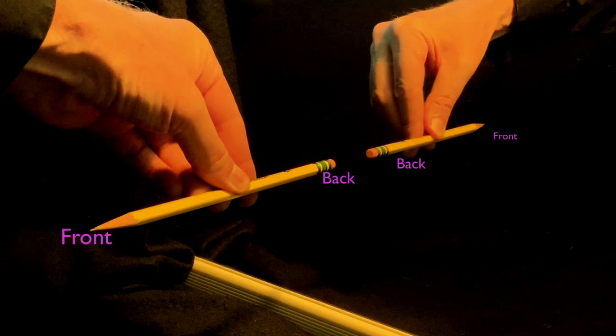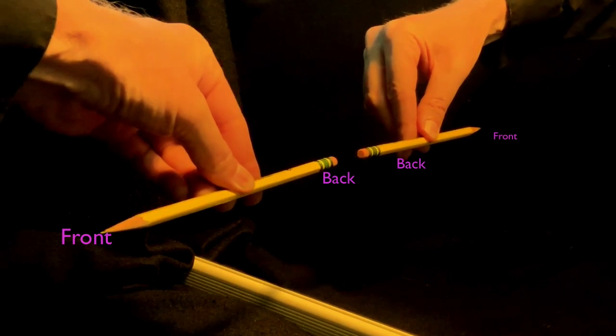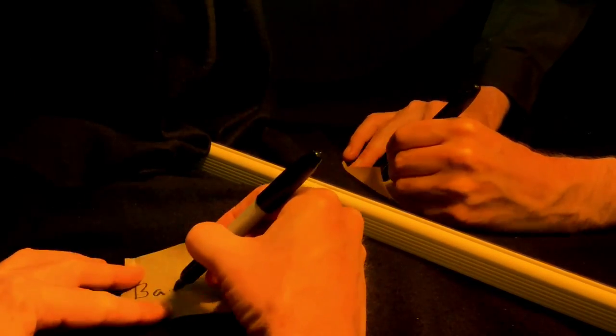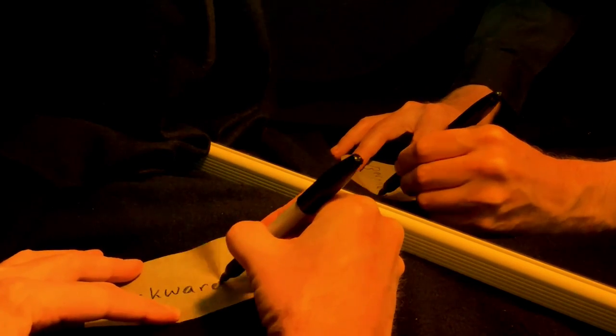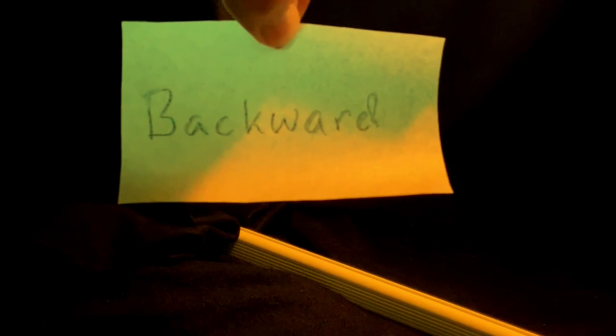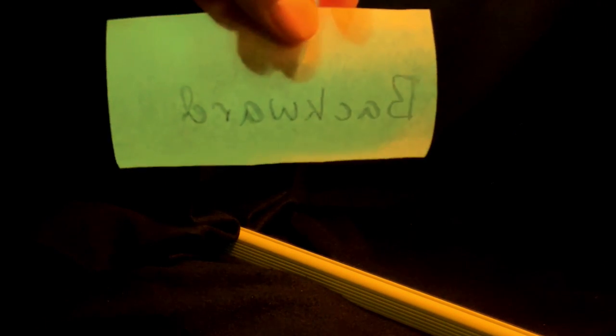The point is this. When you look in the mirror, you're looking at things from behind. So, let's write the word backward on some wax paper. From the front, it looks like this. From behind, it looks like this.